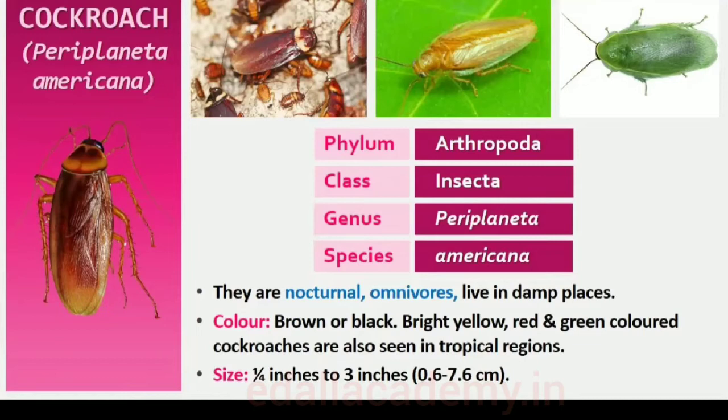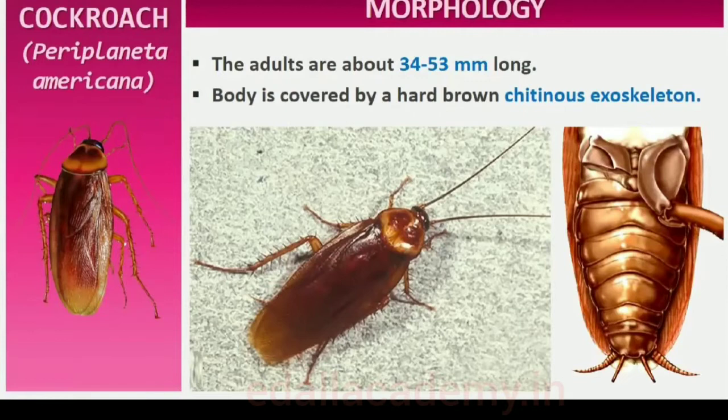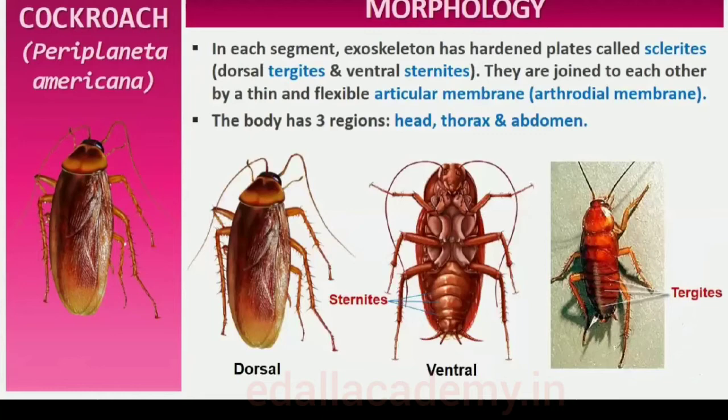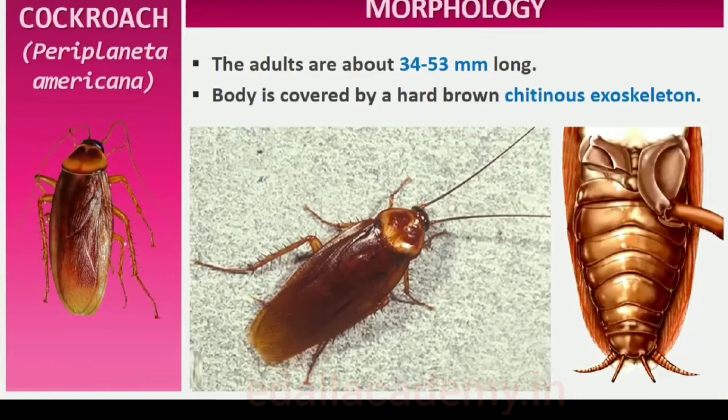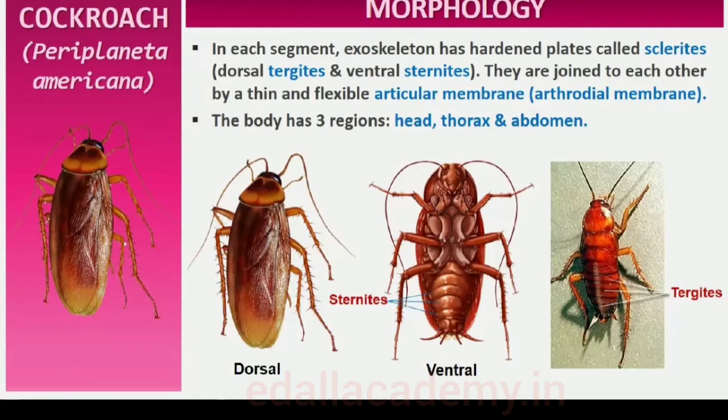7.4.1 Morphology. The adults of the common species of cockroach, Periplaneta americana, are about 34 to 53 millimeters long with wings that extend beyond the tip of the abdomen in males. The body of the cockroach is segmented and divisible into three distinct regions: head, thorax and abdomen. The entire body is covered by a hard chitinous exoskeleton, brown in color. In each segment, the exoskeleton has hardened plates called sclerites — tergites dorsally and sternites ventrally — that are joined to each other by a thin and flexible articular membrane, or arthrodial membrane.